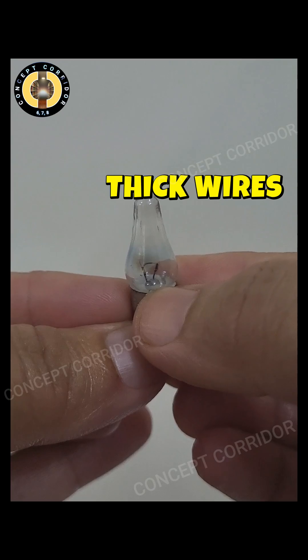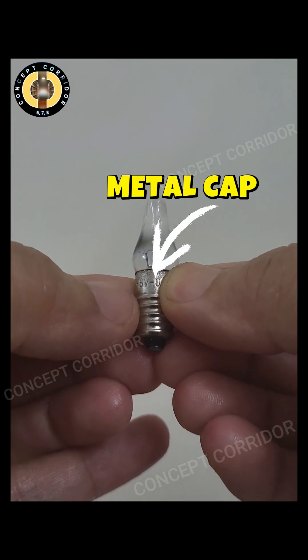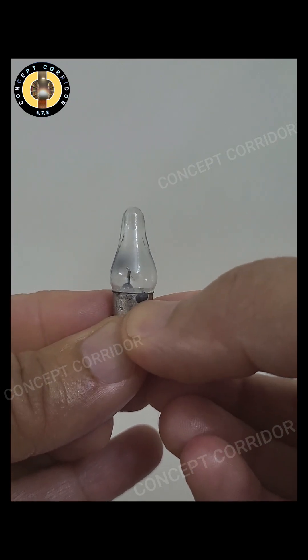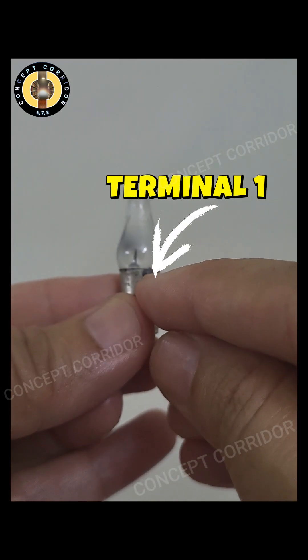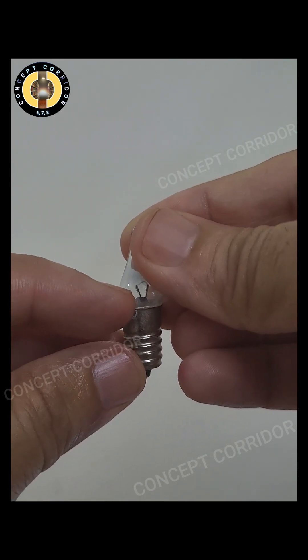This filament is resting on two thick wires. This thick wire comes to this metal cap and forms two terminals. Can you see this black dot here? This is one of the terminals of this torch bulb. The thick wire is coming here and attaching to this black dot.